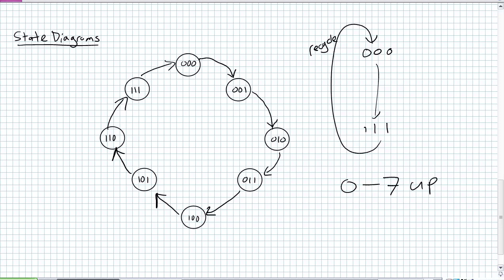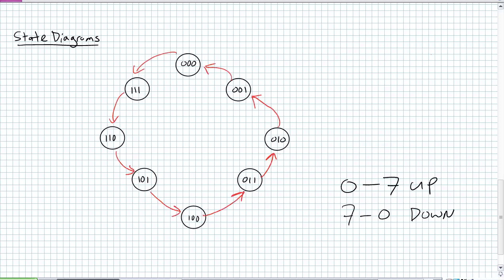So our state diagram would look something like this. Next clock edge, go from triple zero, go to one. If it's in one and the next clock edge comes along, where does it go? To two, you guessed it, three, four, five, six, seven, and then it recycles back to triple zero. So that's a state diagram. All it is, it's a visual indicator of if it's in a certain state, it goes to the next state.